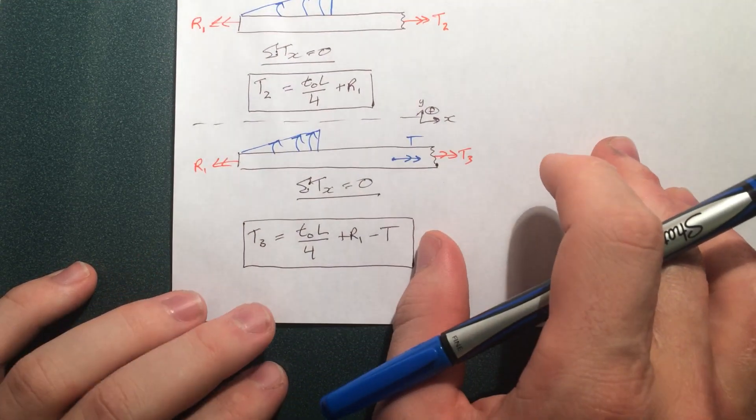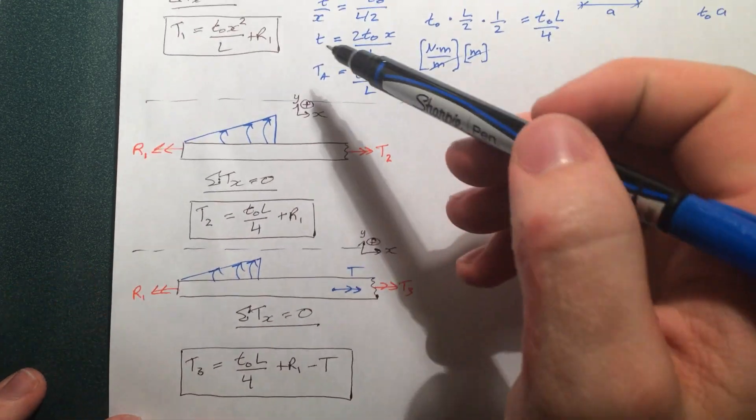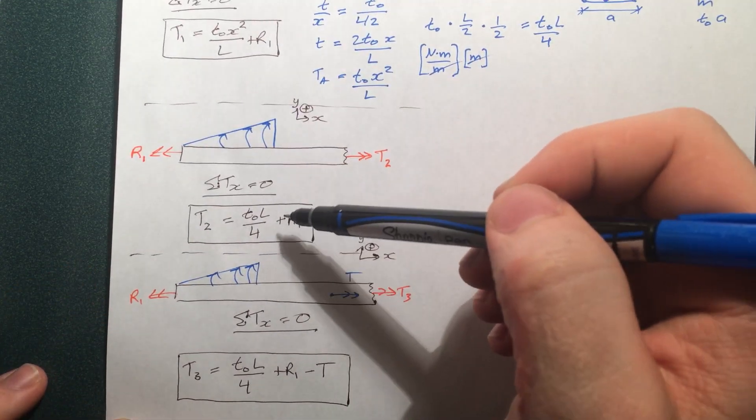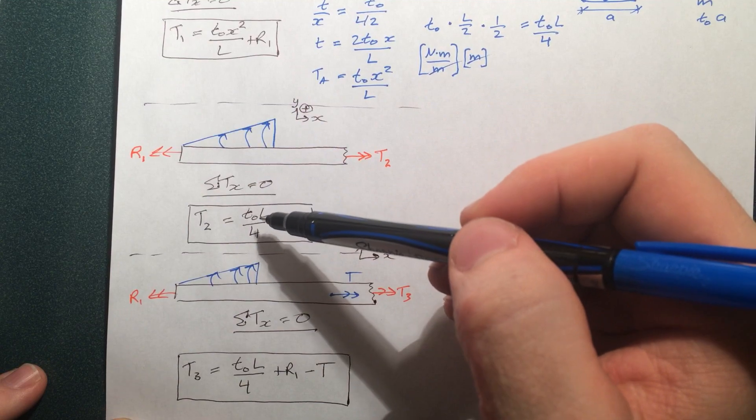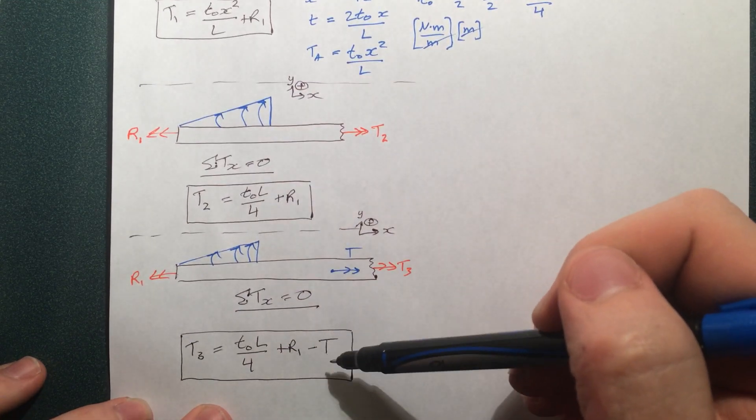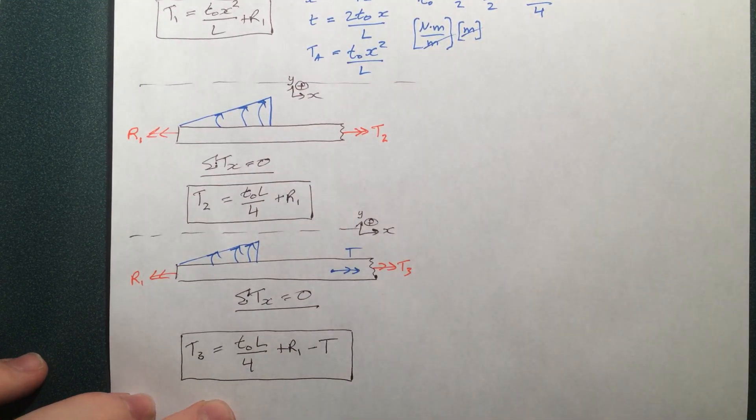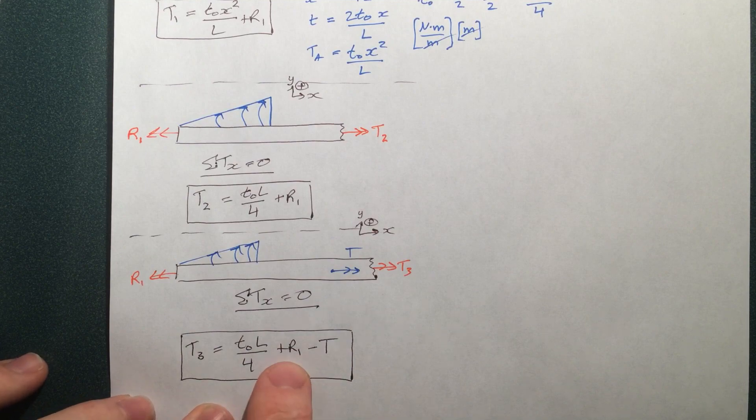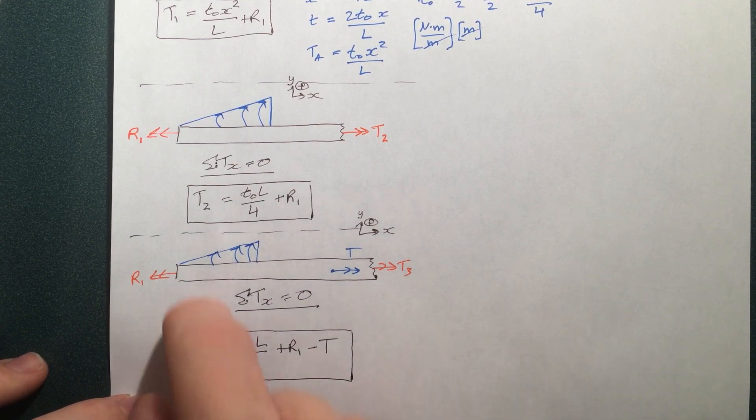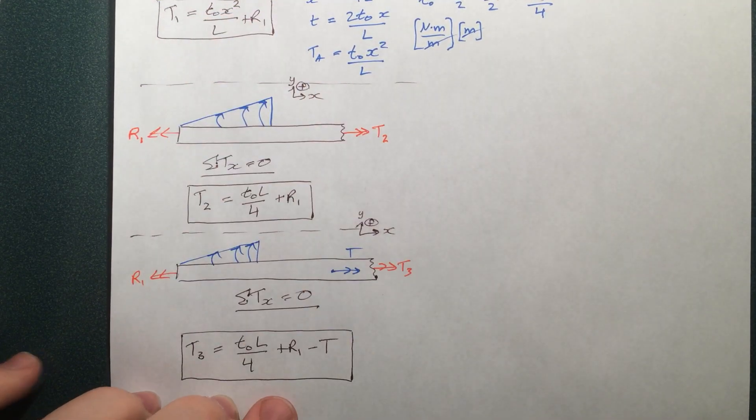So basically, you can see, as we go from T1 to T2, we've just come to the end of the triangular piece, and here we've just added the T. Now to find what R1 is, once you know what R1 is, we can find all these T's.